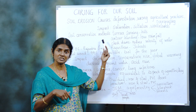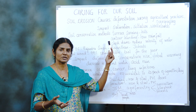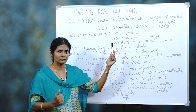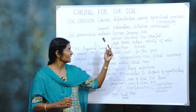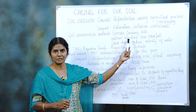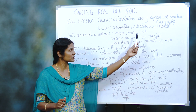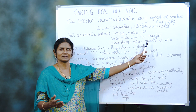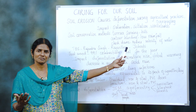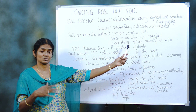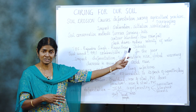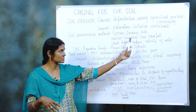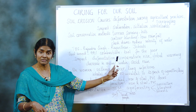Next, we go to soil conservation methods. Whatever is running out, we have to protect. The first one is terrace farming. We should not give up on terrace farming — it is usually suitable in hilly areas. Just like we wear different clothes for different seasons, different areas have different conservation methods.